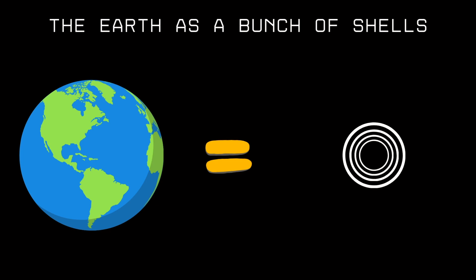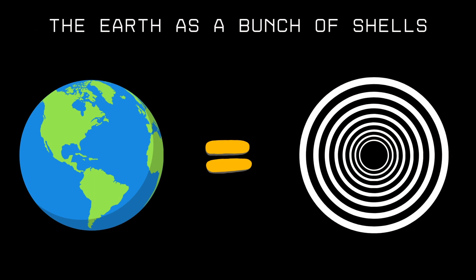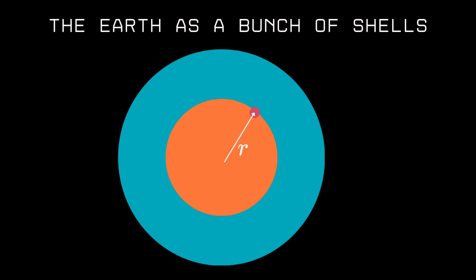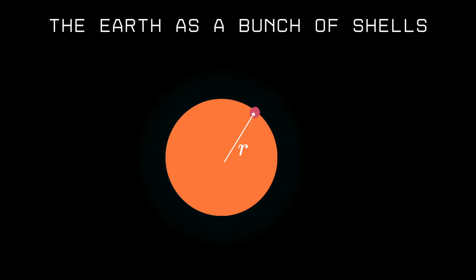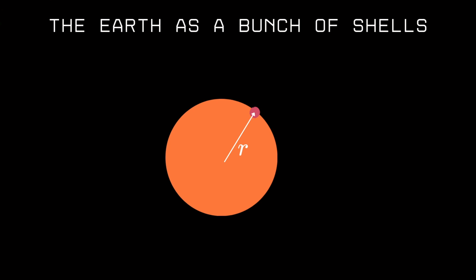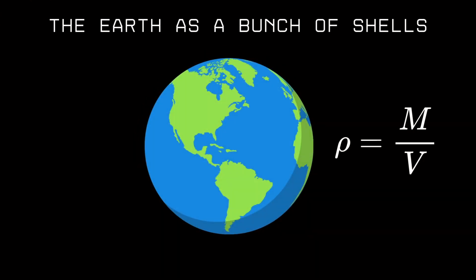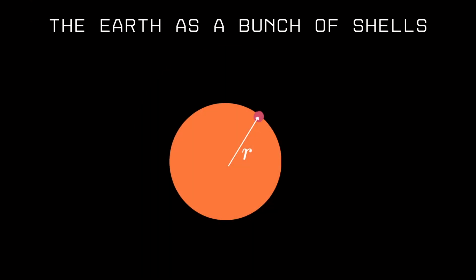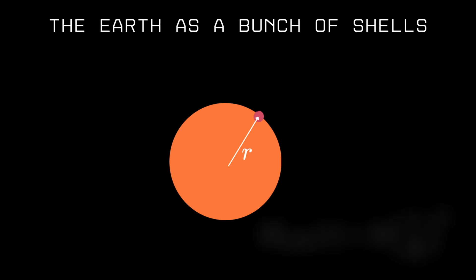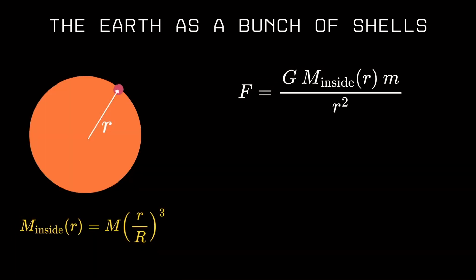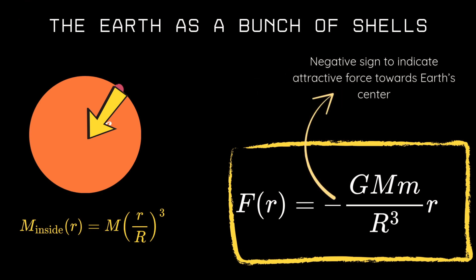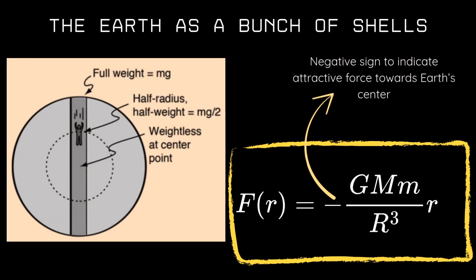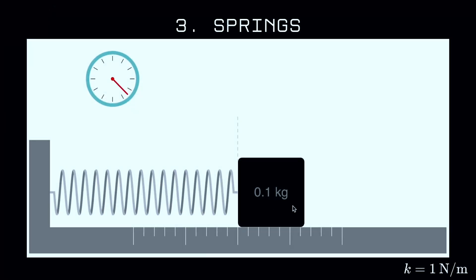Now imagine being inside a solid sphere like the Earth. You can think of the Earth as a bunch of concentric spherical shells stacked together. According to the shell theorem, all the shells outside your radius cancel out and don't affect you — only the mass beneath you, the inner sphere of radius r, contributes to the gravitational pull. So if the Earth has a uniform density rho — the Earth's mass divided by its entire volume — the mass enclosed within radius r is the density times the volume of that sphere. Newton's law then gives the gravitational force at distance r, and this force grows linearly with distance from the center. So as you fall toward the center, gravity gets weaker linearly, and at the center it's zero.